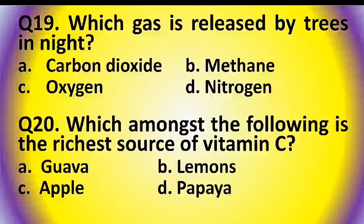Question 20: Which amongst the following is the richest source of Vitamin C? Options are: guava, lemon, apple, or papaya. The answer is option B: lemon.